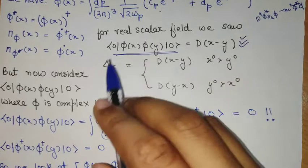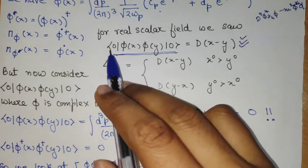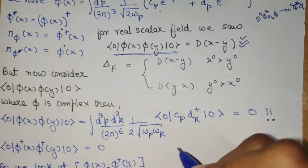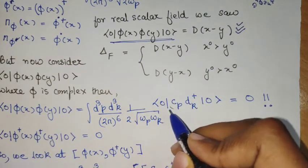So the obvious non-zero term in this kind of case, where we are squeezing from two sides with this zero state, vacuum state, the only non-zero term can be obtained in this fashion.